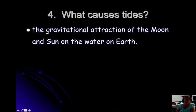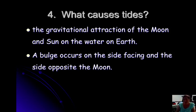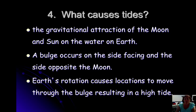It causes tides. The Moon and the Sun are both involved in creating tides on Earth's surface. It's actually caused by gravitational attraction. Gravity between the Moon and the Sun create tides on Earth's surface. Actually, it creates a bulge on the opposite side, and the side facing the Moon, and the Earth rotates in and out of the high tide over the course of a day. Earth's rotation causes locations to move through the bulge, resulting in a high tide.